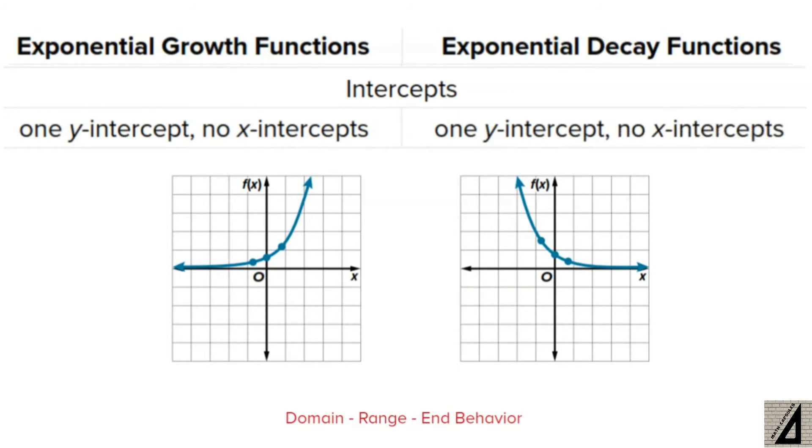Also to find the intercepts, we have only one y-intercept in each of the exponential growth and decay functions, and we have no x-intercepts at all in either growth or decay functions.